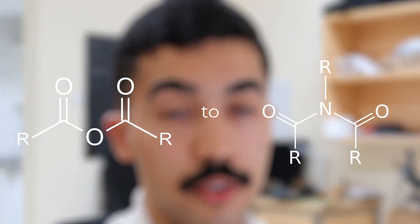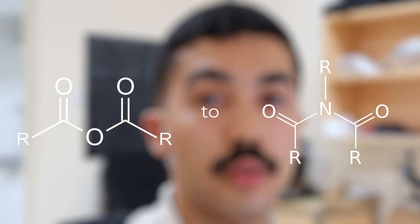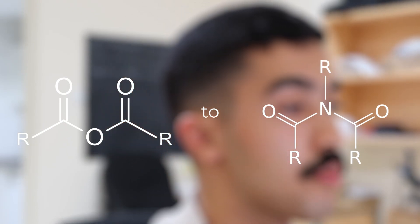Today we're going to be looking at converting phthalic anhydride to phthalimide, or more generally, converting anhydrides to amides. If you don't know what those are, google them. The functional groups are probably going to be on the screen right now.